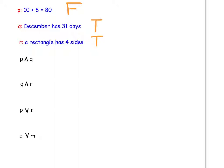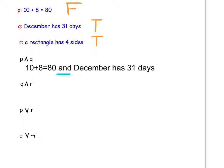Now we will write the compound statements. The first one is P AND Q — the inverted V symbol means AND, as you remember from your truth tables. So the compound statement is: 10 plus 8 equals 80, AND December has 31 days. Statement P is false and statement Q is true. With AND, both must be true, which is not the case, so this compound statement is false.